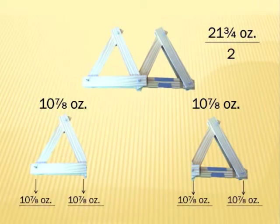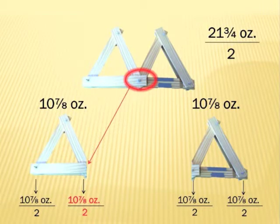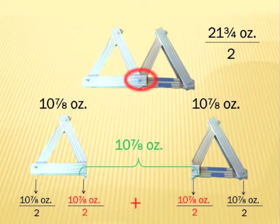This weight is evenly distributed between the two bottom nodes. Since the node that the load is being placed on is in the middle, it has both the left half of 10 7/8 and the right half of 10 7/8 being placed on it. Add these two weights together, and the total weight being placed on the node is 10 7/8.